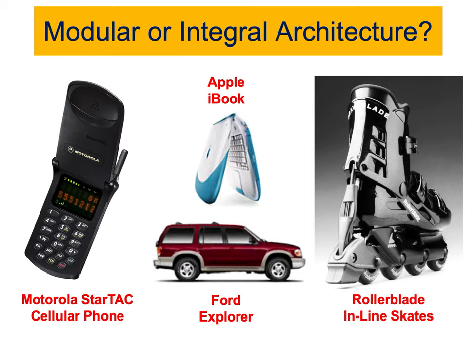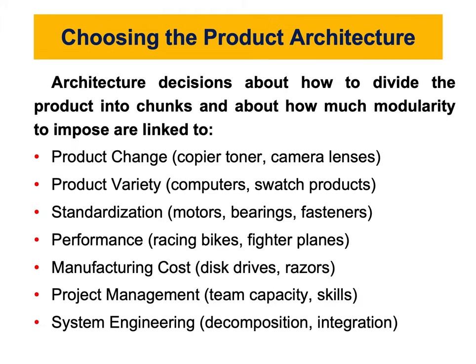My rule of thumb is that I will always go back to the list of characteristics or factors that play into deciding whether we are going to design our product based on integral or modular architecture. Keep these in mind so whenever you have a new product, you can apply them. For example, change and variety — if a product needs to be easily changed, that points to modular.